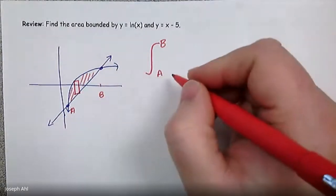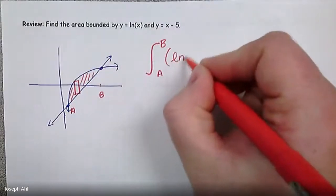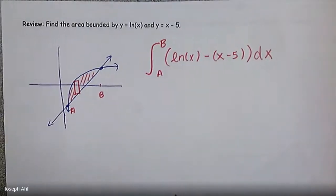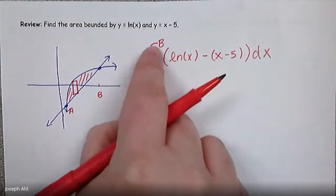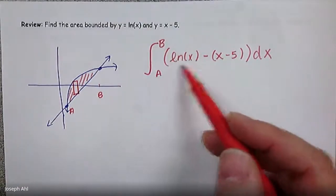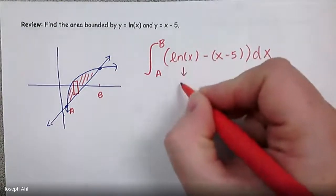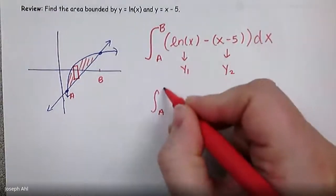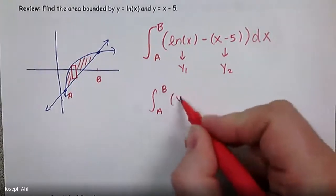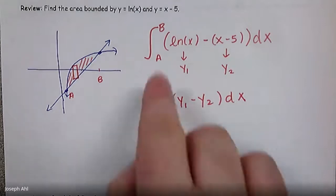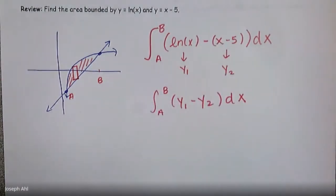We're going to integrate from A to B of LNX minus the quantity X minus 5, with respect to X. Once I find those bounds, they're not necessarily going to be nice integer values. And beyond that, we don't know how to find the antiderivative of LNX. So I'm going to store LNX in Y1 and X minus 5 in Y2, and use the calculator to calculate the definite integral from A to B of Y1 minus Y2, dx. So this is going to be really a full calculator question. Let's go over to our calc.